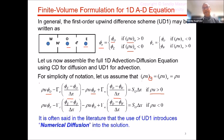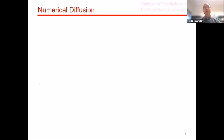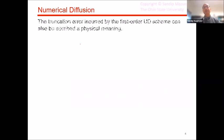As we said, in the literature we often say that first-order upwind introduces numerical diffusion. The question is: what does that really mean? To understand that, let's do some tricks here and try to ascribe a physical meaning to these equations and approximations.